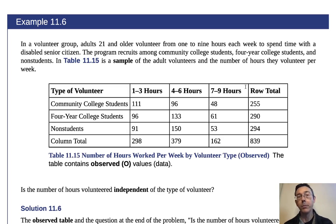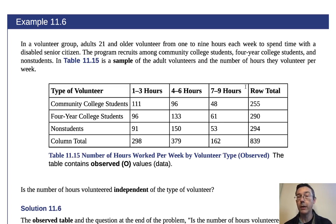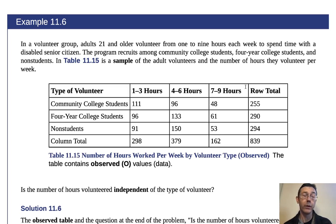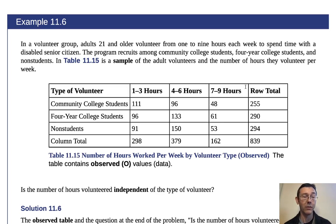In a volunteer group, adults 21 and older volunteer from one to nine hours each week to spend time with a disabled senior citizen. The program recruits among community college students, four-year college students, and non-students. Here we have a contingency table, sometimes called a two-way table, showing how these volunteers break down among two categorical variables: the type of volunteer, and the number of hours volunteered — viewed in three categories: one to three hours, four to six hours, and seven to nine hours.